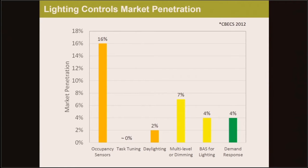Before talking about a more reliable way of demand response, let's review some market penetration of the technologies just discussed. In orange, we see occupancy sensors, which have by far the most market penetration at 16%. Task tuning doesn't happen that much but is gaining some ground. Daylighting is at 2% — so not much market penetration of the three control technologies. In yellow, we see the technologies needed to enable demand response: continuous dimming at 7%, and unlike HVAC, lighting rarely has a central control system, although this is becoming more common. In green, we see active demand response at 4% market penetration — still pretty low.